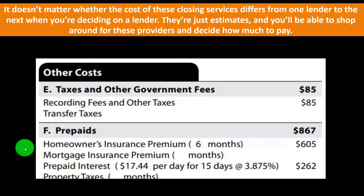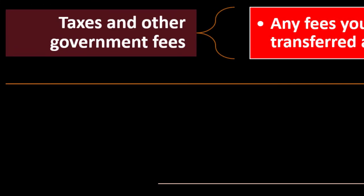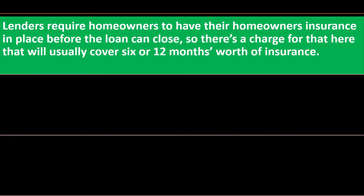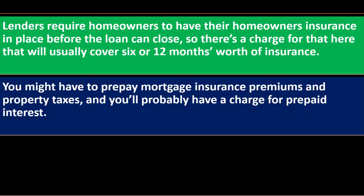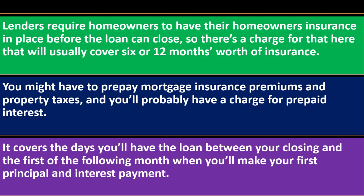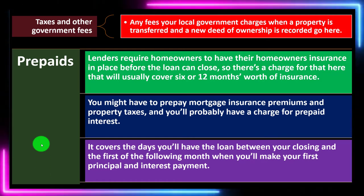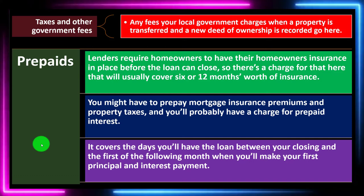Section F covers prepaids: homeowners insurance premiums (six months), mortgage insurance premiums, prepaid interest, and property taxes. Taxes and other government fees include any charges from local government when a property is transferred and a new deed recorded. Lenders require homeowners to have their homeowners insurance in place before the loan can close. There's a charge that usually covers six or twelve months of insurance. You might also prepay mortgage insurance premiums, property taxes, and prepaid interest covering the days between your closing and the first of the following month.